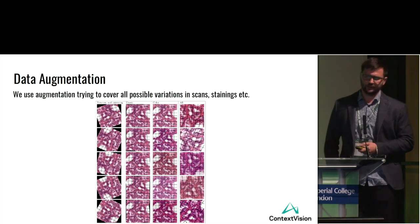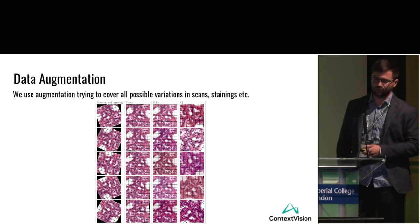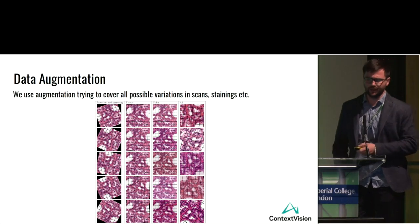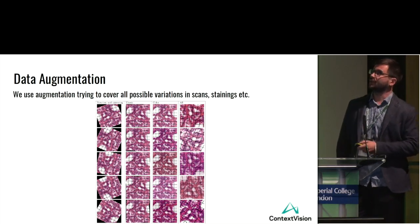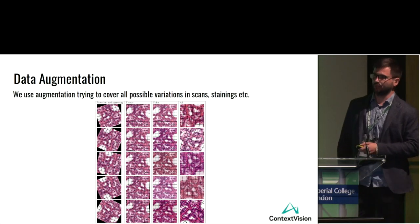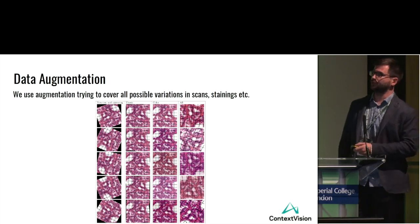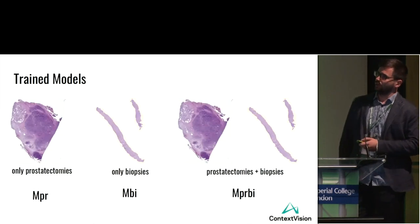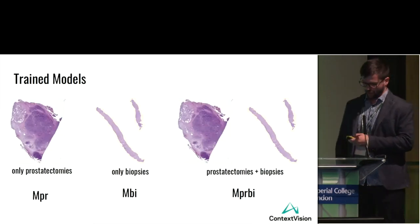There is also a lot of variation in H&E staining, so we apply augmentation during training continuously. This includes geometric augmentation like rotation and mirroring, color adjustments like brightness, and elastic deformation — though we try to preserve morphology and avoid disturbing the image too much.